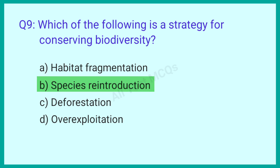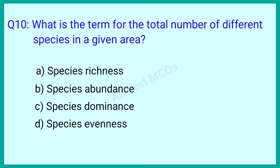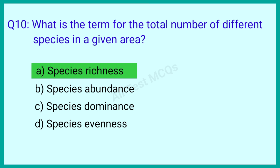Question number 10: What is the term for the total number of different species in a given area? The correct answer is option A: Species richness.